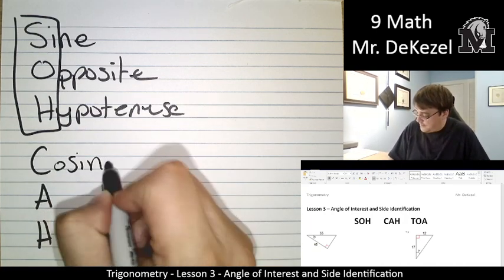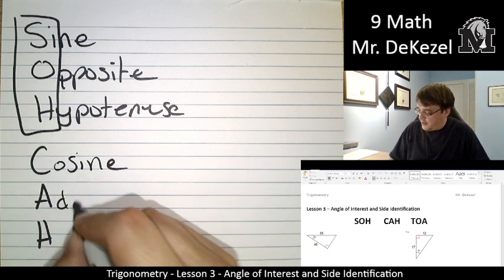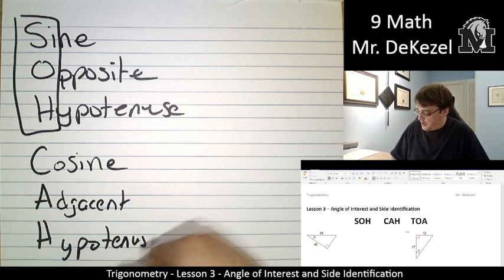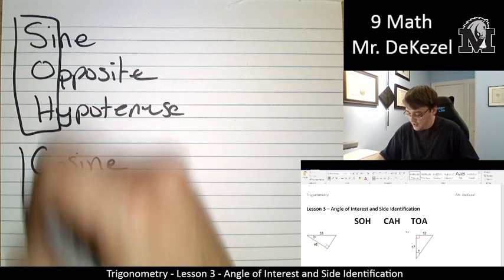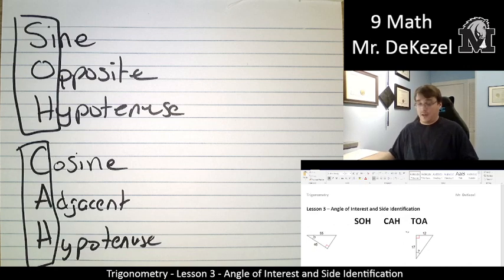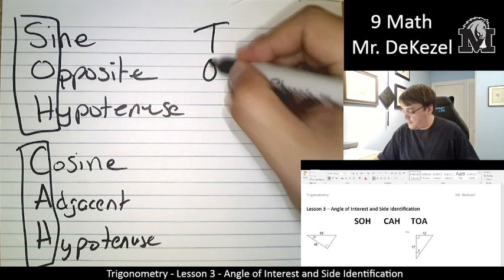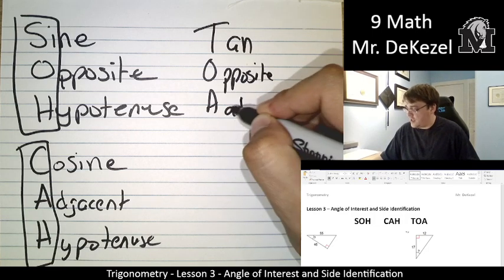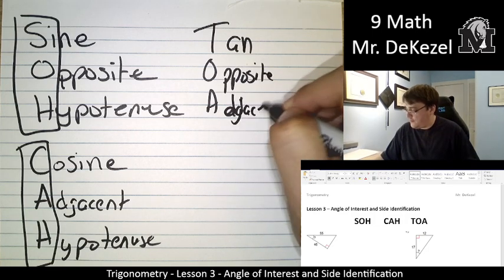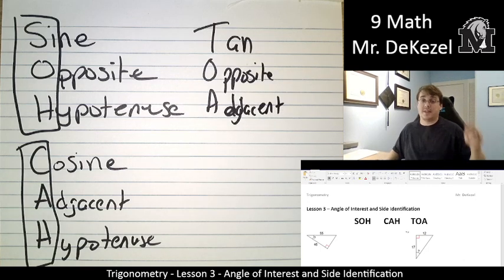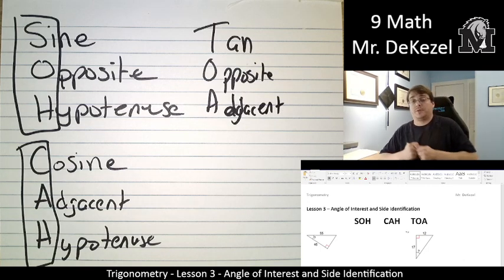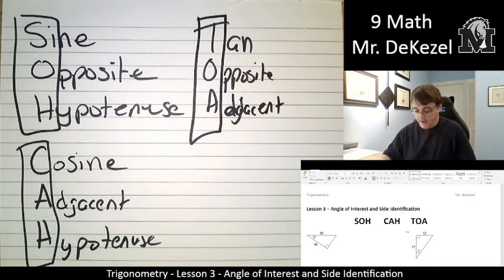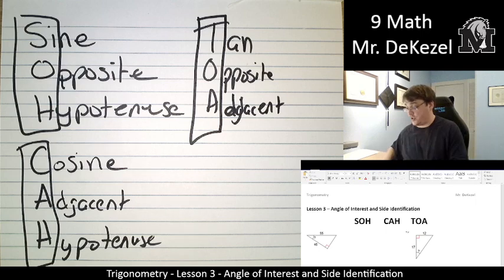Cosine is when we have an adjacent side and the hypotenuse. The hypotenuse is still the longest side across the right angle. And we use tan when we have the opposite side and the adjacent side. And it's important that we're able to identify which sides we have so that we can determine which ratio to use.